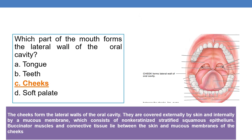Which part of the mouth forms the lateral wall of the oral cavity? The lateral wall of the oral cavity is formed by cheeks. Cheeks form the lateral walls of the oral cavity. They are covered externally by skin and internally by a mucous membrane consisting of non-keratinized stratified squamous epithelium. Buccinator muscles and connective tissue lie between the skin and mucous membrane of the cheeks.